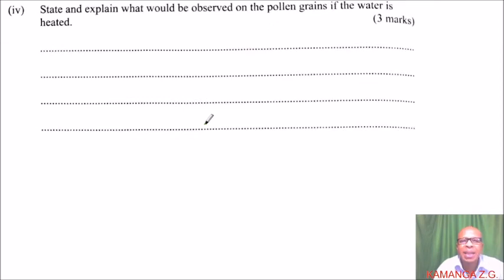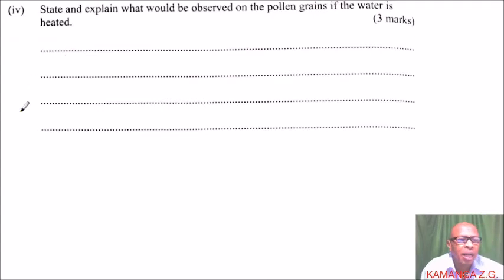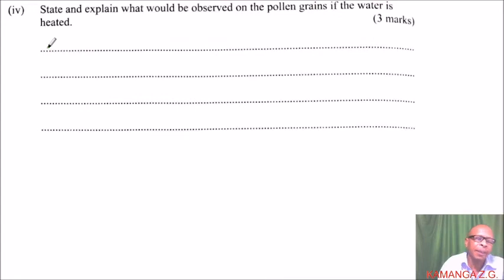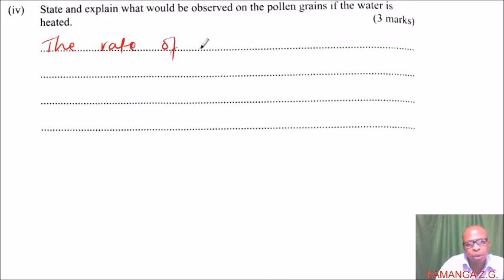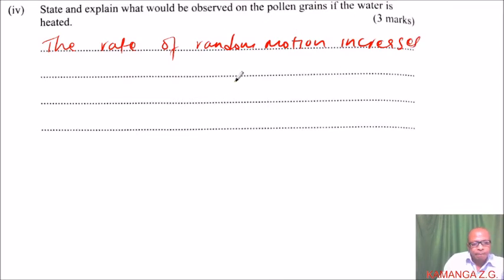Part four: state and explain what would be observed on the pollen grain if the water is heated. If the water is heated, the movement of the water molecules increases — that is, the kinetic energy increases — and as a result it will cause the water molecules to collide with pollen particles. You will observe that the random movement increases. So we can say the rate of random motion of the pollen grains increases.